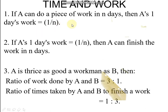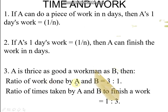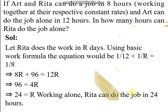If A can do a piece of work in n days, then A's one day work is 1 by n. If A's one day's work is equal to 1 by n, then A can finish the work in n days. If A is thrice as good a workman as B, then the ratio of work done by A and B is 3 is to 1, and the ratio of times taken by A and B to finish a work is equal to 1 is to 3.